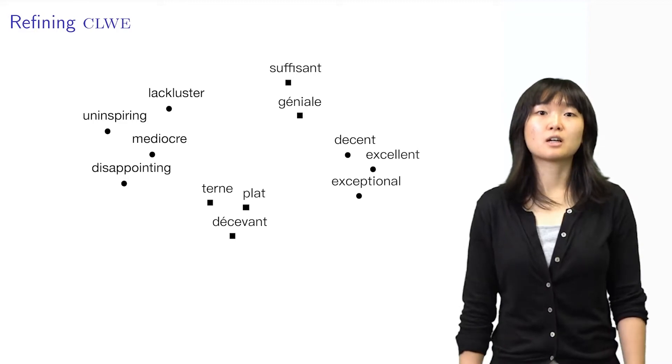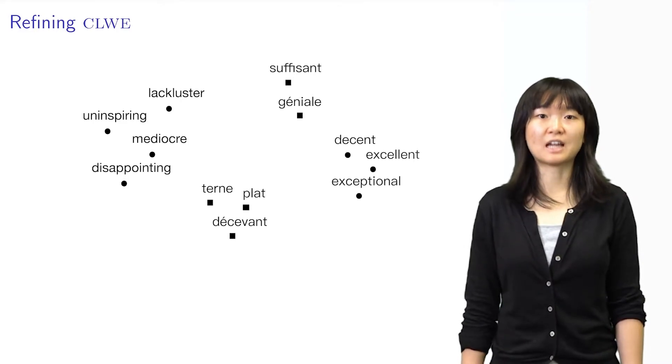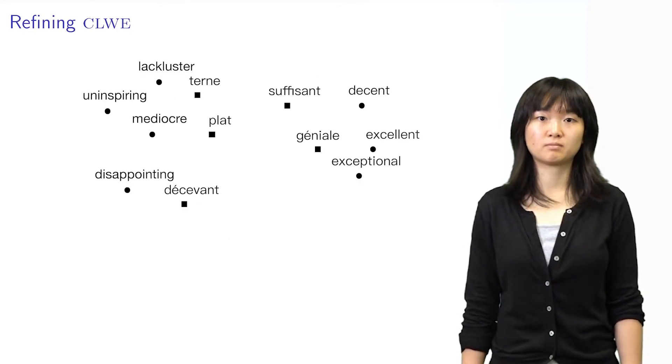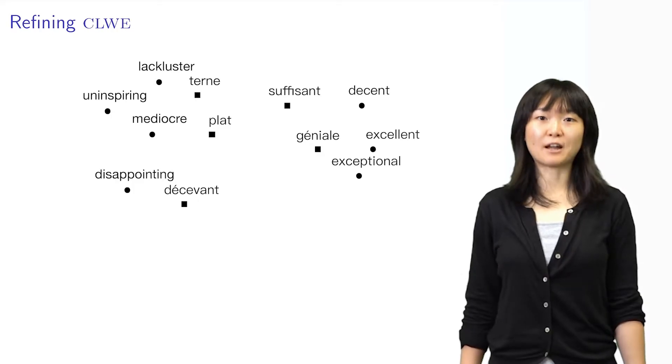and other pairs, like decent and excellent, to move farther. What if we could modify the embedding space according to our feedback like this?